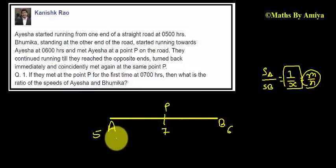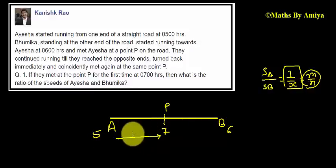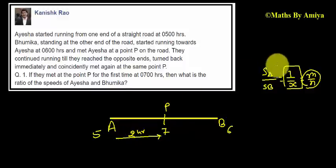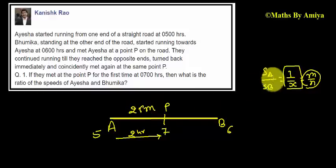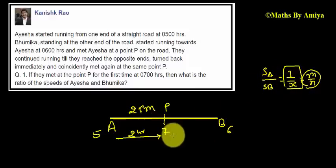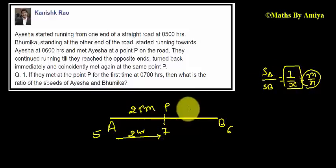ISI travels from point A to point P, that is from 5 to 7 — a 2-hour journey. If the speed is 1 km per hour, then the distance from A to P is 2 km. For Bhoomika, the speed is X. From 6 to 7 is only 1 hour, so in 1 hour the distance covered by Bhoomika is X km.